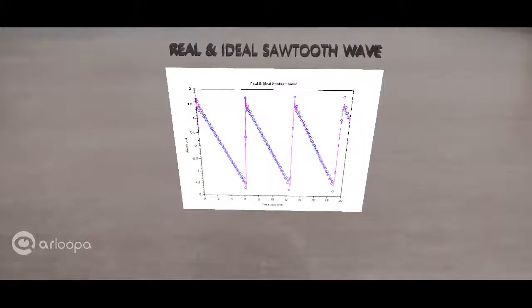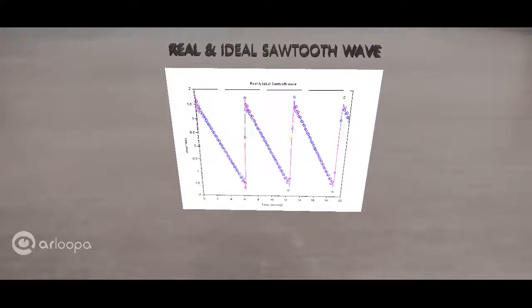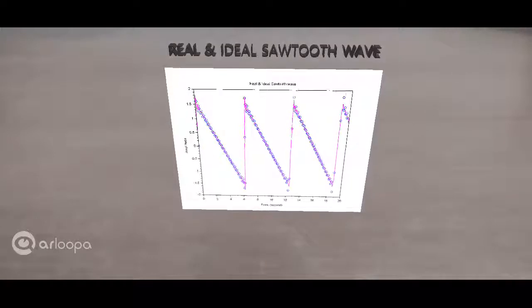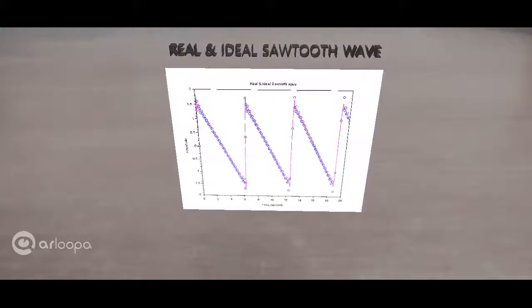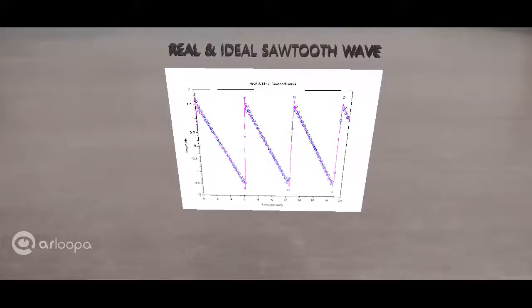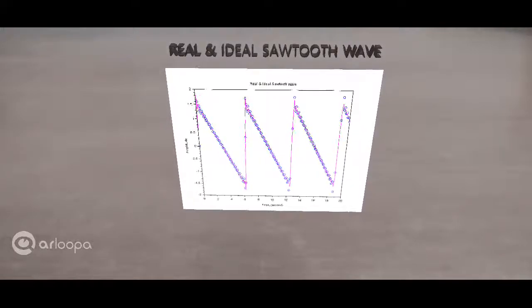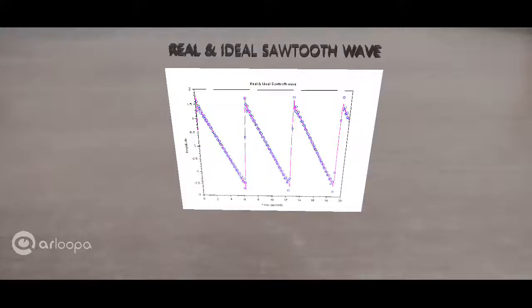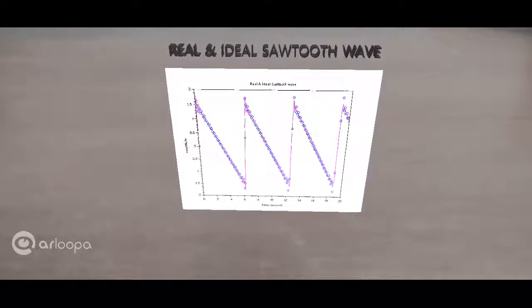This is a comparison of real and ideal sawtooth wave. In this example, when I mention real, it means a sawtooth wave formed by additive synthesis of up to the 21st harmonic. And an ideal sawtooth wave is an additive synthesis of infinite harmonics. So when we compare these, by the way,